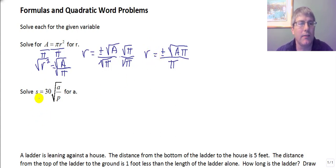Our second sample problem, we want to solve s equals 30 times the square root of a over p for a. Similarly, we want to go ahead and isolate the square root. I'm going to divide both sides by 30, so we get the square root of a over p equals s over 30.